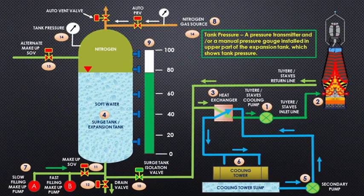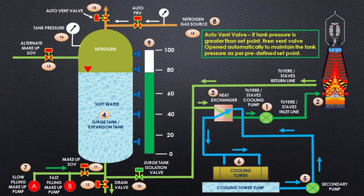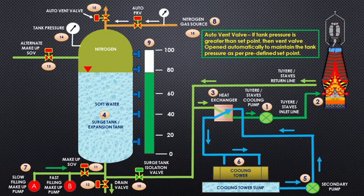Tank pressure: a pressure transmitter and/or a manual pressure gauge installed in upper part of the expansion tank shows tank pressure. Auto vent valve: if tank pressure is greater than set point, then vent valve opens automatically to maintain the tank pressure as per predefined set point.